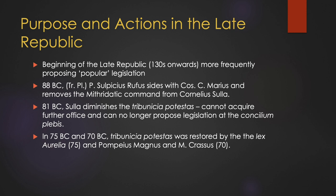Following Sulla's reforms to the Tribunate, Tribunes could no longer advance up the cursus honorum, nor could they pass legislation in their concilium plebis. This effectively killed off the Tribune. Although five years later, the Lex Aurelia restored the Tribunes of the plebs' right to hold further offices, it wasn't until 70 BC that Pompey and Crassus restored fully Tribunicia Potestas and the right of the Tribunes to propose legislation.